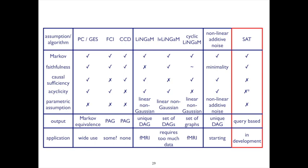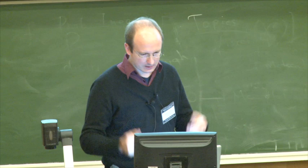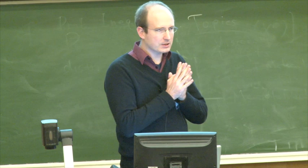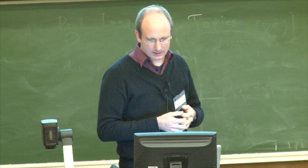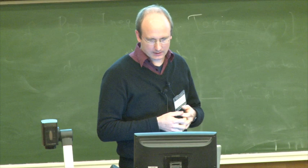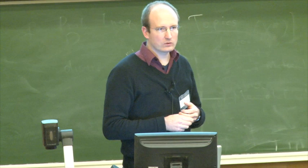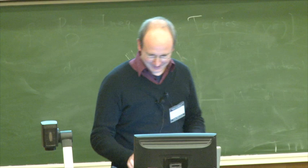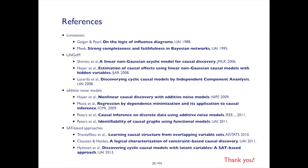In terms of current usage: PC, GES, and FCI are in very wide use. I'm not aware of any use of the CCD cyclic causal discovery algorithm. LiNGAM is in great use already in economics and is obviously used in its variants a lot in fMRI data. The latent variable LiNGAM is actually not very good with regard to small sample sizes — you need enormous sample sizes. The cyclic LiNGAM works fine on fMRI data. The non-linear additive noise stuff is really taking off. And the SAT stuff is still in development — very new. Thank you very much. We've only made it to slide 30 of way more.